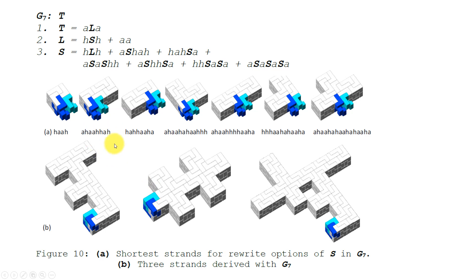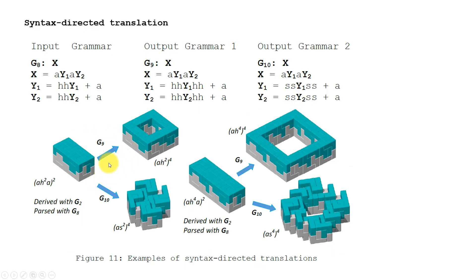G6 goes on this process, and we can define syntax directed translation grammar using one input grammar and then convert the input structure based on two different output grammars to create configurations like this.